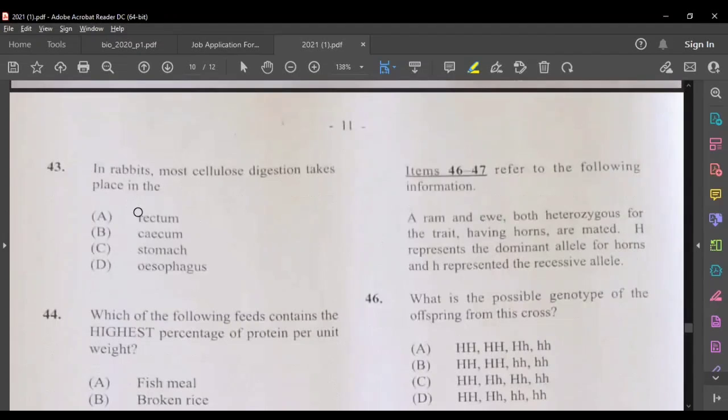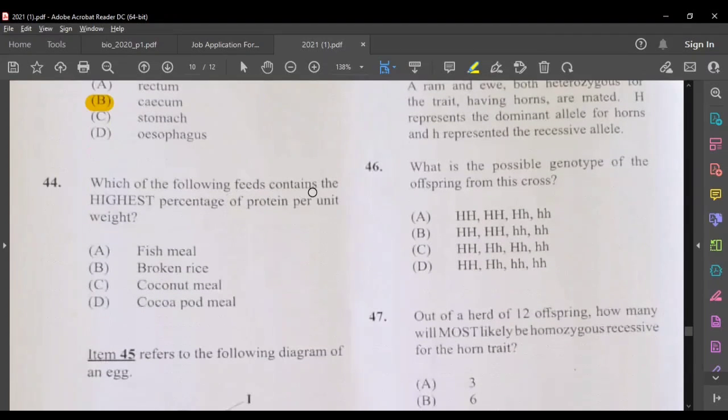In rabbits, most cellulose digestion take place in the rectum, cecum, stomach, or esophagus. Most of the cellulose digestion occur in the cecum. Here is where you have the bacteria and they will break down the cellulose. Which of the following feeds contain the highest percentage of protein per unit weight? Fish meal, broken rice, coconut meal, cocoa pod, obviously fish meal, fish has lots of protein.